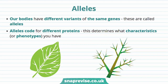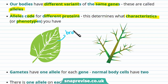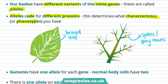As well as having different genes that code for different proteins, our bodies also have different variants of the same genes. These are called alleles. Alleles code for different proteins, which determines what characteristics or phenotypes you have. For instance, if a plant inherits a particular allele, it might have a broad leaf. If a plant inherits another allele, it might have spikes or spiny leaves.